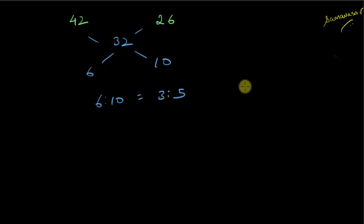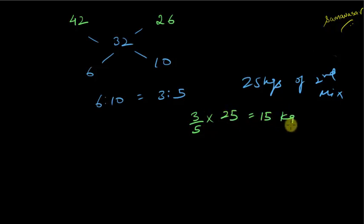Now I was mixing 25 kg of the second mixture. This one was given because they are in the ratio of 3 is to 5. So how much was the first mixture? It was simply 3/5 into 25, so having this I get 15 kg.